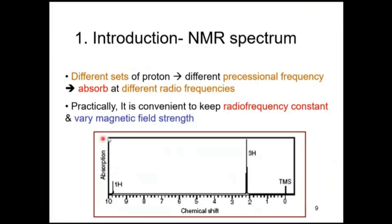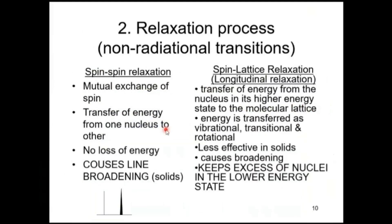If we can measure these energies, we get an NMR spectrum. Different sets of protons will have different precessional frequencies and will absorb at different radio frequencies. Practically it is convenient to keep radio frequency constant and vary the magnetic field strength — this is called field sweep NMR analysis.